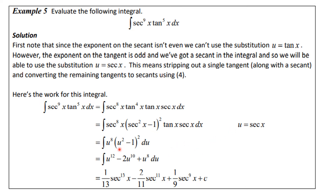Continuing the algebra, we square the binomial getting u to the fourth minus two u squared plus one, then distribute u to the eighth across that. Integrating term by term and reversing the substitution, the final answer is one-thirteenth secant to the thirteenth x minus two-elevenths secant to the eleventh x plus one-ninth secant to the ninth x plus C. Make sure you understand all these calculations.